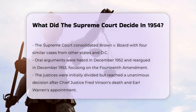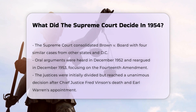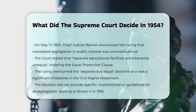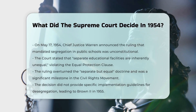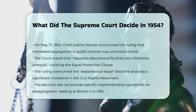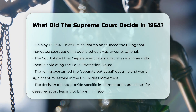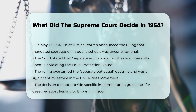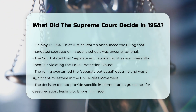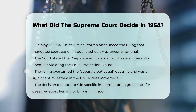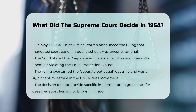On May 17, 1954, Chief Justice Earl Warren delivered the Supreme Court's unanimous decision. The court ruled that laws mandating racial segregation in public schools were unconstitutional, even if the segregated schools were otherwise equal in quality. The decision stated that separate educational facilities are inherently unequal and thus violate the Equal Protection Clause of the 14th Amendment of the U.S. Constitution. This ruling overturned the separate-but-equal doctrine established by Plessy v. Ferguson and marked a significant milestone in the Civil Rights Movement.